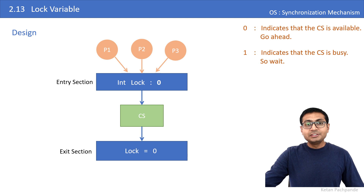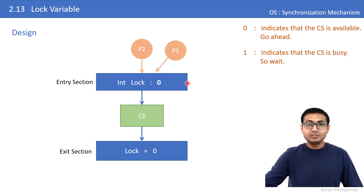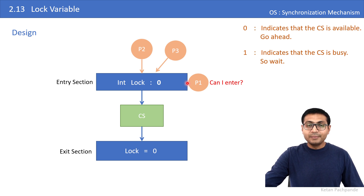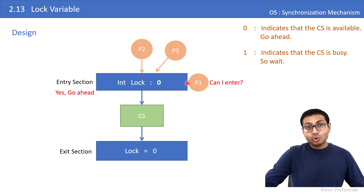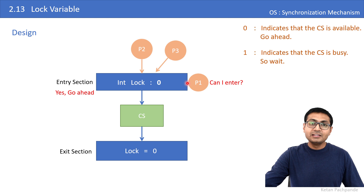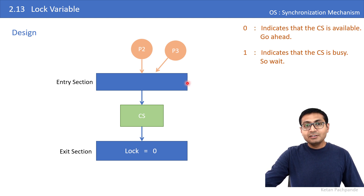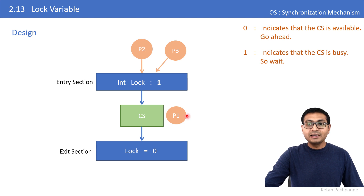Let me demonstrate this with a sequence of process execution. Initialize the lock variable to 0. Process P1 arrives and checks the entry section — the current value of lock is 0, meaning the critical section is free. So the entry section allows P1 to proceed, and it sets the value of lock from 0 to 1 before entering the critical section.